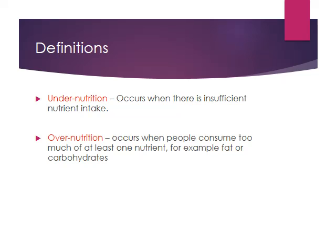So we've got undernutrition, which occurs when there isn't enough nutrients taken in, and overnutrition is when people consume too much of at least one nutrient, like fat or carbohydrates.